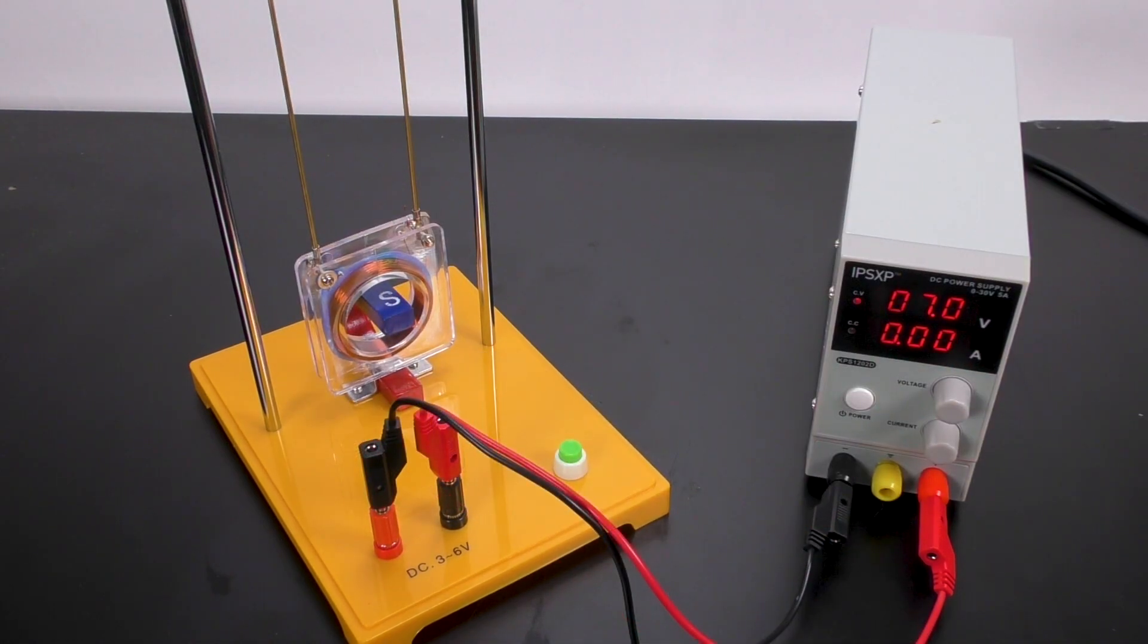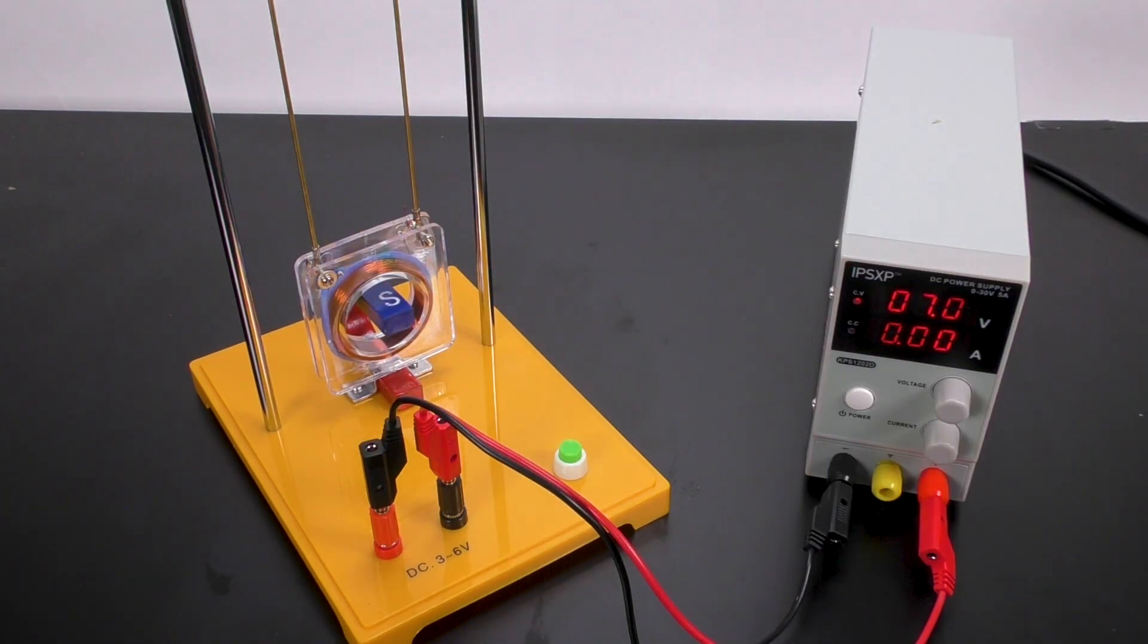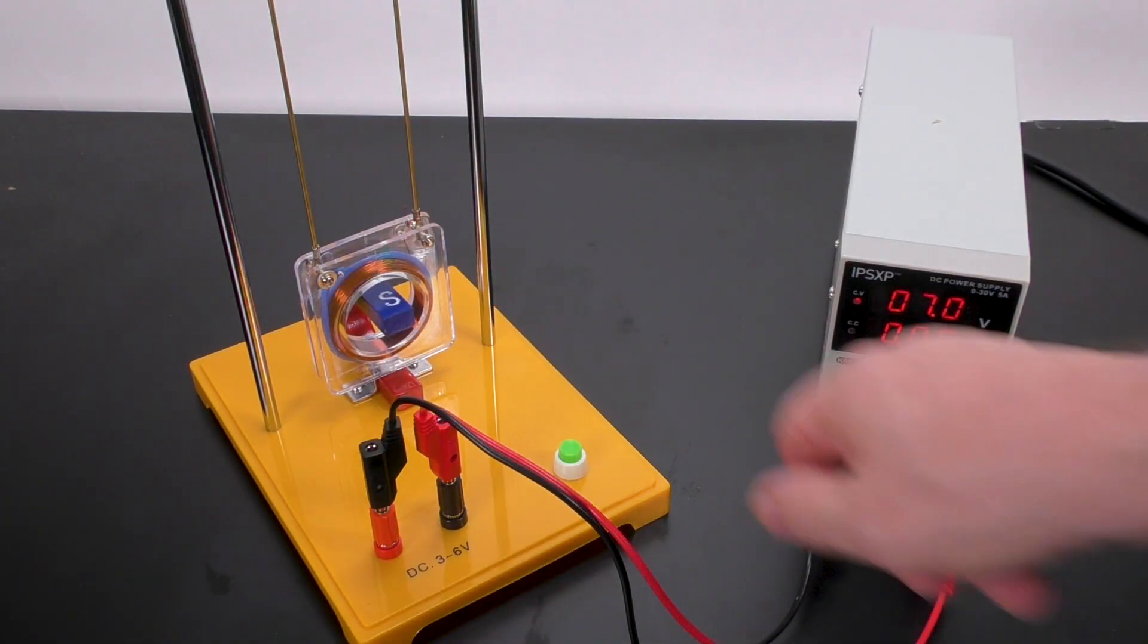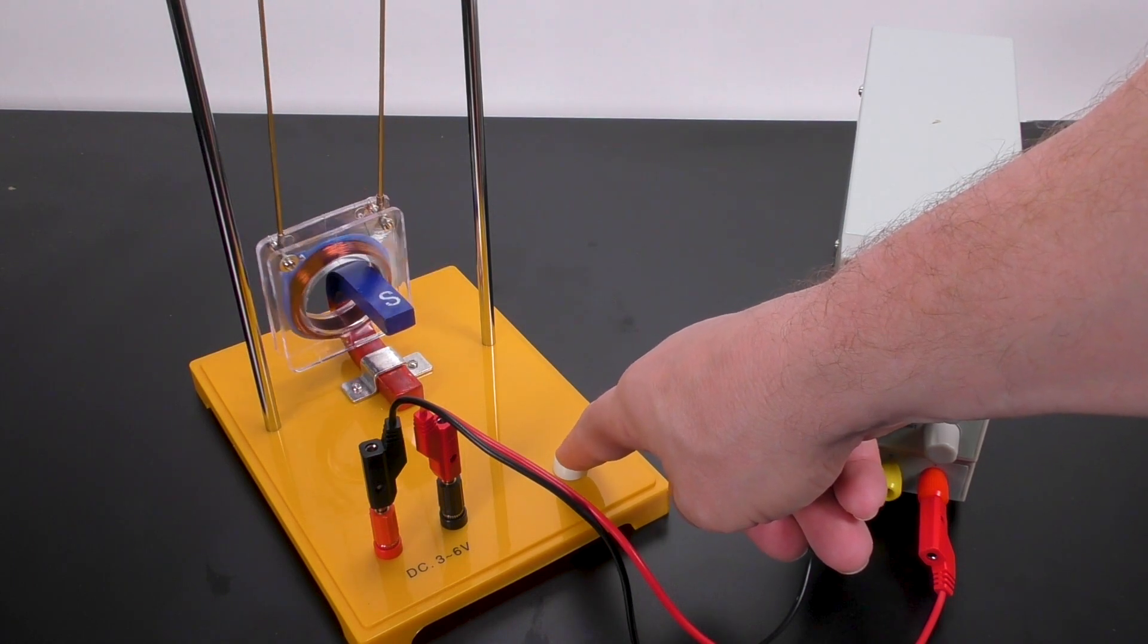To alternate the activity, I just switch the polarity of the power supply. So now the current is flowing in the opposite direction. So when I engage the button, it moves in the opposite direction.